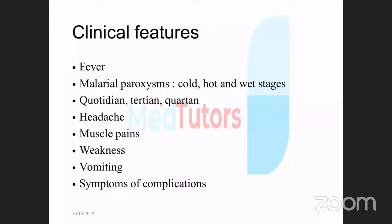Symptoms include fever, headache, muscle pains, weakness, and vomiting, as well as symptoms of affected organs and complications. Fever in malaria can be classified based on duration — 24, 48, or 72 hours — described as quotidian, tertian, or quartan. Each species of malaria has a specific fever duration pattern, which is worth knowing.